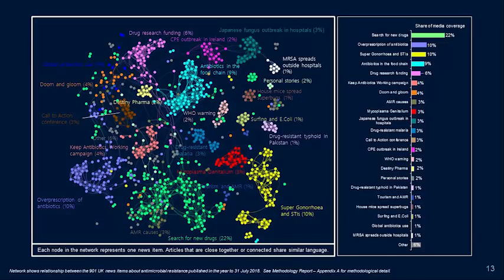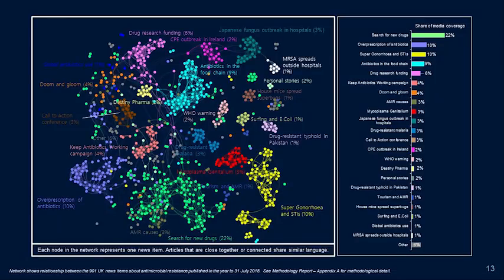The third issue is disjointed media coverage. The way antimicrobial resistance is covered in the media can be quite unhelpful in driving public understanding. Our map of UK media coverage over a 12-month period shows that coverage is typically driven by specific disease areas and outbreaks — which is also the case in the US and Germany. While this isn't unusual in global health, it does mean that coverage of antimicrobial resistance often appears disjointed and fragmented when seen only through a disease or outbreak-specific lens, making it difficult for the public to connect the different aspects of the issue.